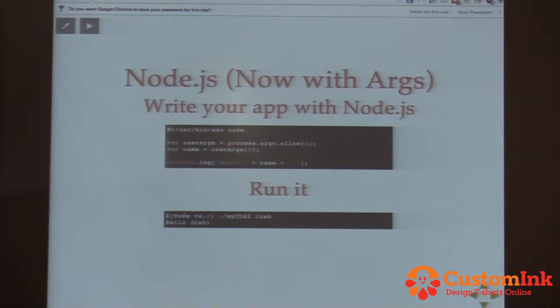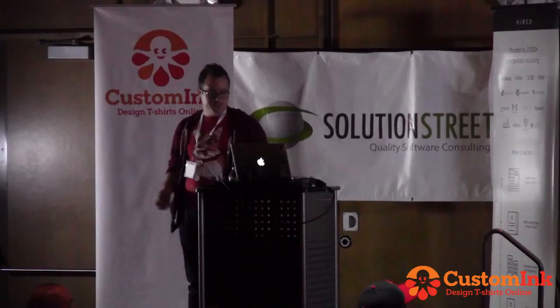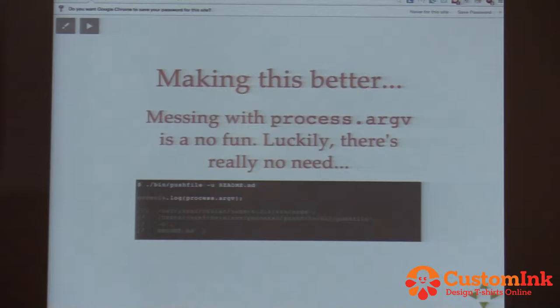But we don't want to just console log out Hello World — we want to use arguments and interact with this command line tool. So we need to interact with process.argv. We're going to pass in a name into our app. The array of arguments in process.argv — that's the third section of argv. It's really confusing. But we can pull out the name, run our application, and get 'Hello Josh,' which is awesome.